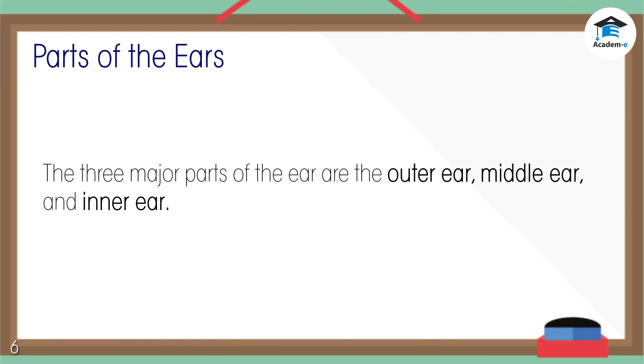Our ears have three major parts: outer ear, middle ear, and inner ear. They work together so we can hear sounds.